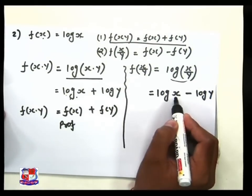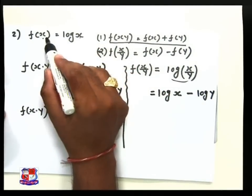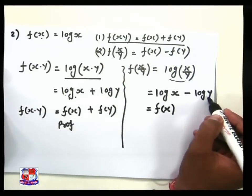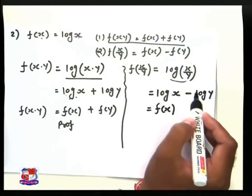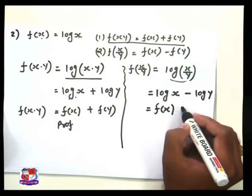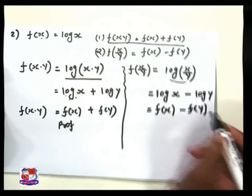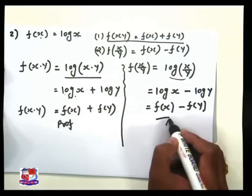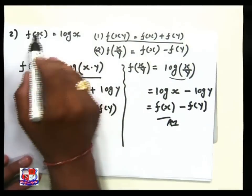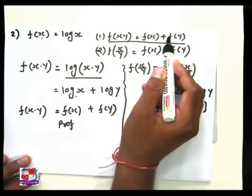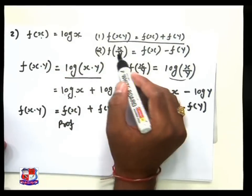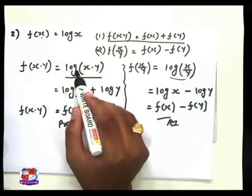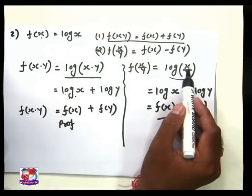Here log x is equal to f of x, and log y — since x is replaced by y, we get f of y. So f of x by y equals f of x minus f of y. Hence we proved both results: if f of x equals log x, then f of xy equals f of x plus f of y, and f of x/y equals f of x minus f of y. Remember: multiplication inside log gives addition, and division inside log gives subtraction.